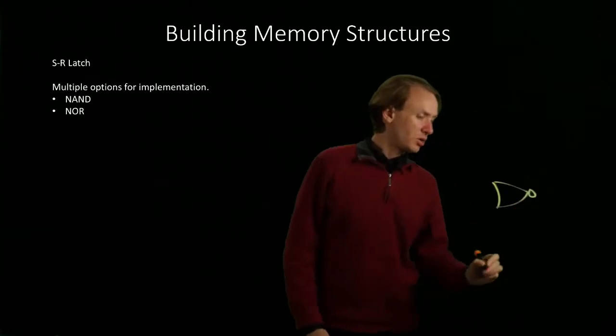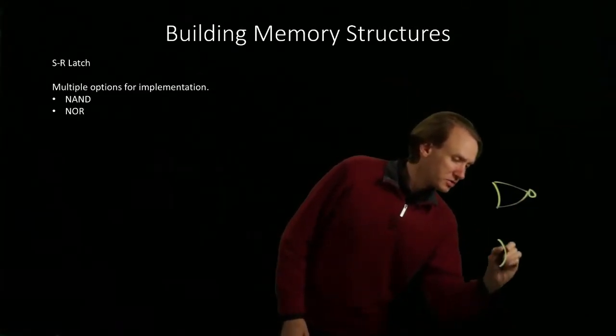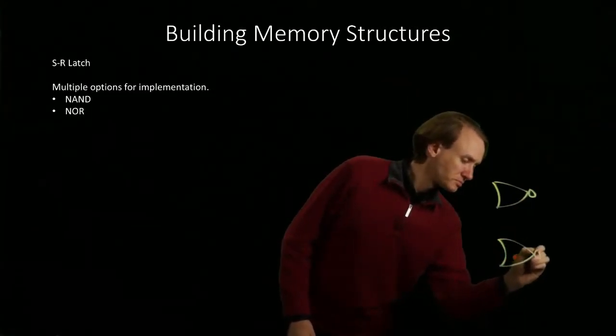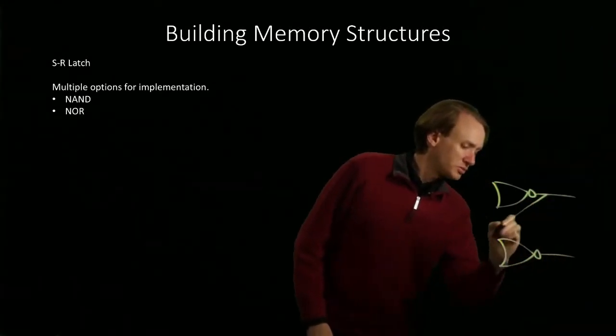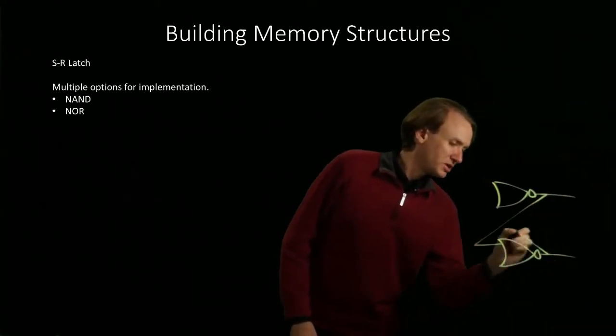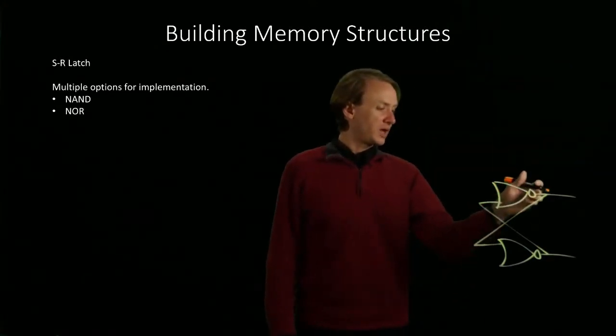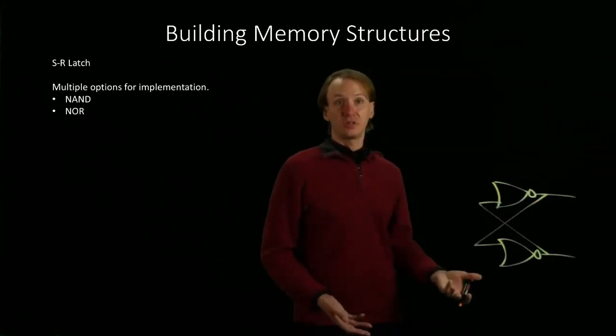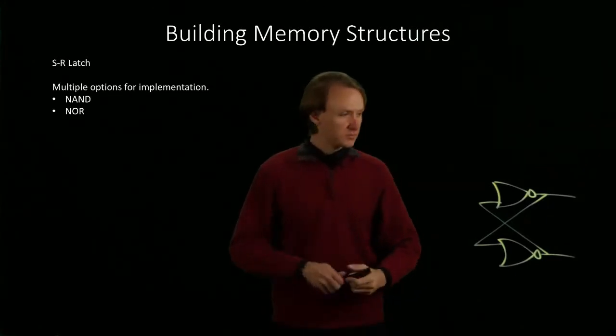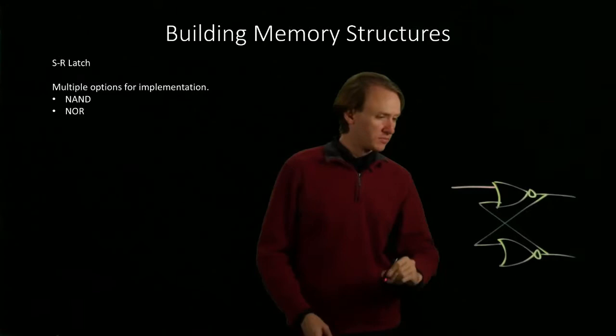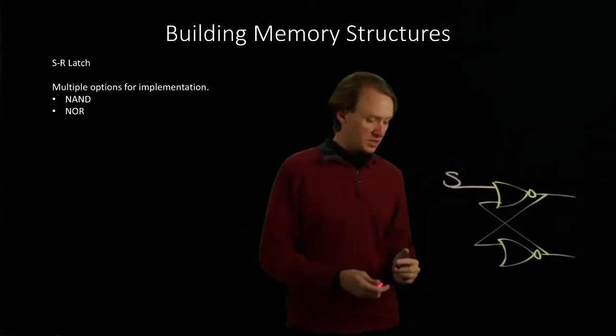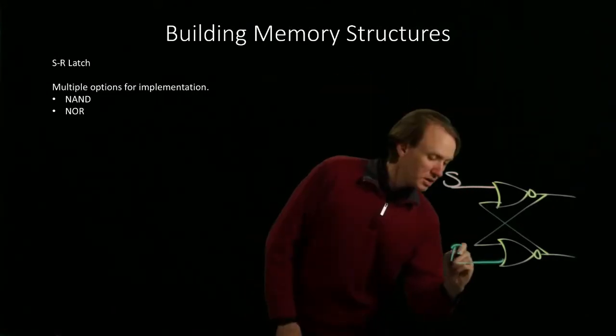As it is based on NOR gates, I will have two of those, and these are cross-coupled, which means that I will take the output of one gate and pass it in as the input to the other one. Now I will have two inputs: I can have a set and a reset.